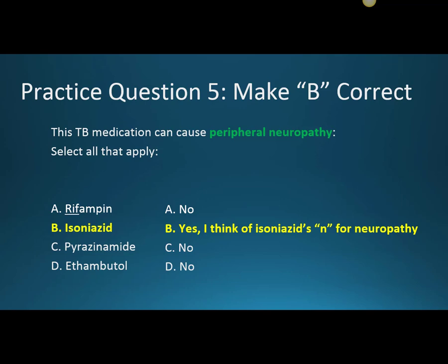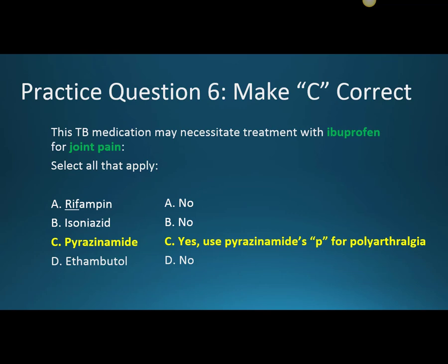Question five: this TB medication can cause peripheral neuropathy. Isoniazid, which is a staple, can cause peripheral neuropathy — a weakness of the nerves, so somebody buttoning a shirt might struggle because they can't feel that tactile sensation. Think of Isoniazid's N for neuropathy. Question six: this TB medication may necessitate treatment with ibuprofen for joint pain. A side effect of Pyrazinamide in almost half of patients is polyarthralgia — pain in many joints. Use the P in Pyrazinamide to remember polyarthralgia.